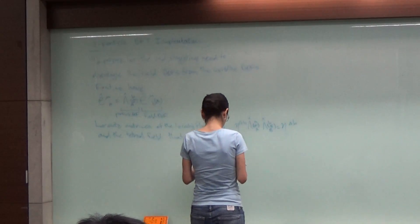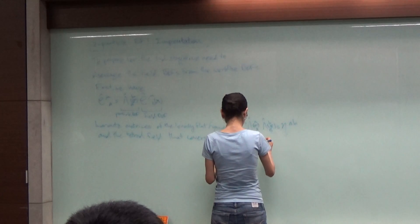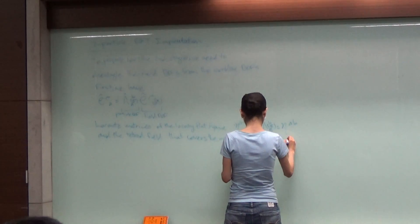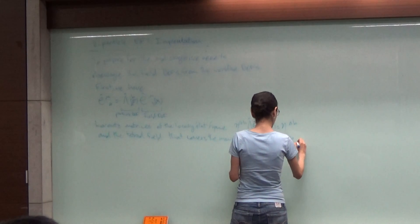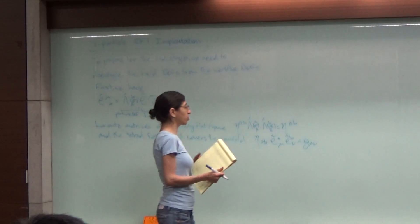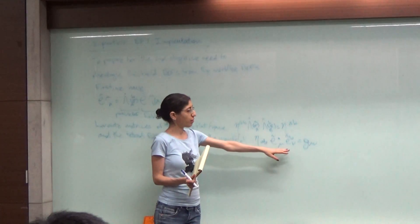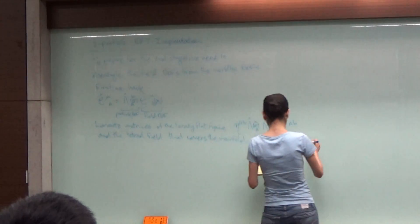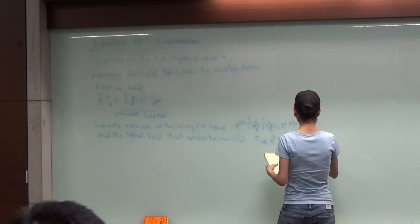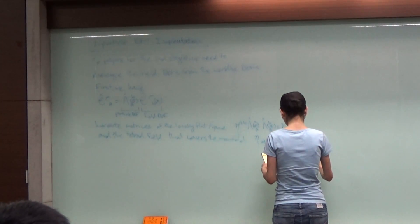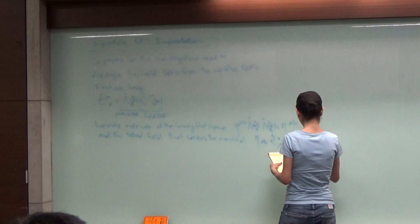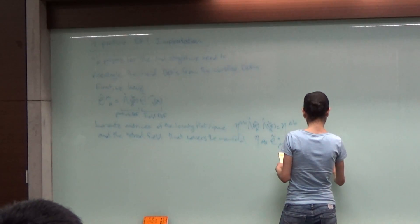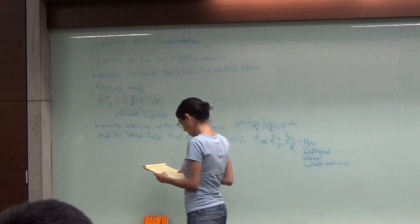Basically we now put in another gauge invariant, because we have internal Lorentz invariance in our choice of the local tetra here. So we have additional internal symmetries. When we listed all symmetries in the problem we mentioned it.